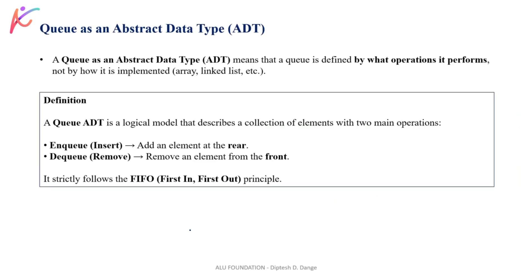Now let's understand queue as an abstract data type. A queue as an ADT means it is defined by what operations it performs, not how it is implemented. ADT tells us what operations we can perform. We can implement it using arrays or linked lists. The how is not important; what operations are available is what matters. So this is the basic concept behind abstract data type.